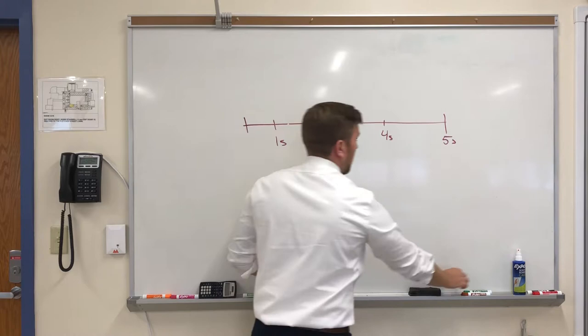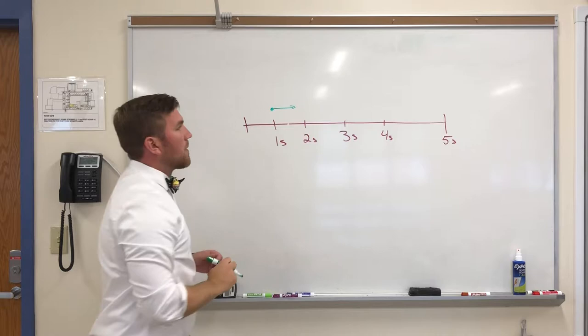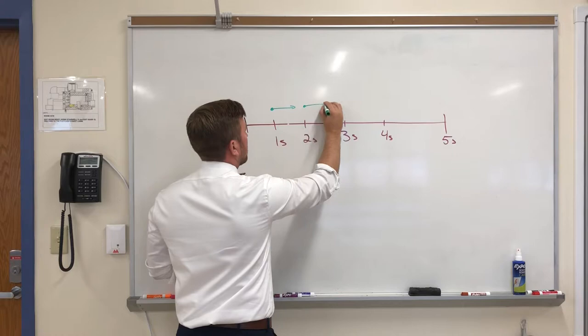A motion map is just showing what's happening at each point in time. So for instance, if I have something traveling at a constant velocity, such as the carts we used the other day. At one second, this is my cart, and the arrow represents the velocity of the cart.